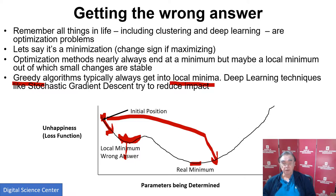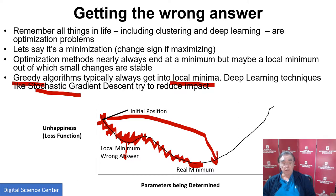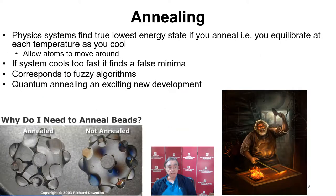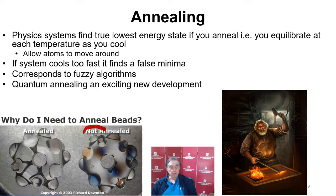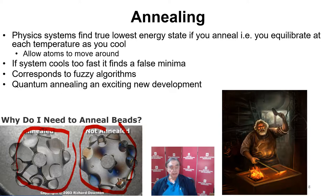Only if you made a mistake and moved over to the other region first would you actually find the real minimum. Stochastic gradient descent tries to wobble around so that you can get over a false minimum and come down to the true one. Notice if you are in a local minimum, you actually have to increase the function to get out — that's the origin of statistical methods which put fluctuations into the system. This is illustrated by annealing, which is designed to use the thermal motion of particles to jump over false minima.